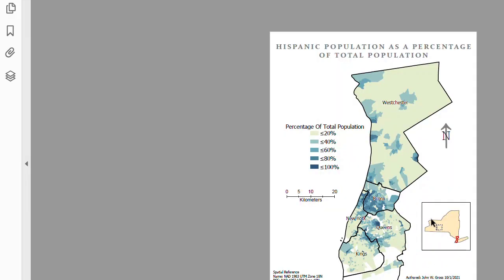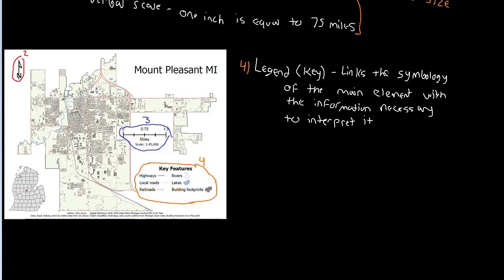You can see in this case, right, where we have a choropleth map which is a type of thematic map. If I did not give you this legend right here, you would have no idea what the different colors meant. Now you do. You know that this sort of beige color means that the population of that area has less than 20% Hispanic, and the dark blue areas down in here have populations that are nearly a hundred percent, between 80% and 100% Hispanic. So legends provide very important context for the user to be able to interpret whatever the main element is, what it's trying to show.